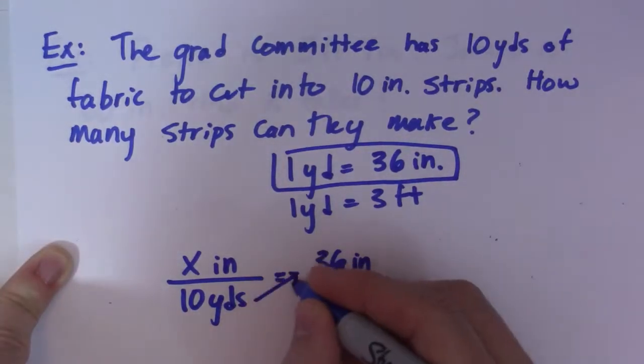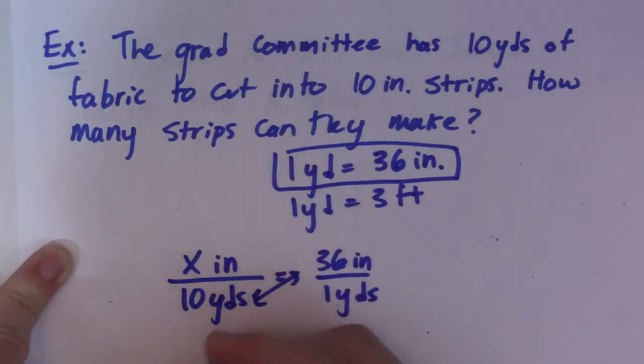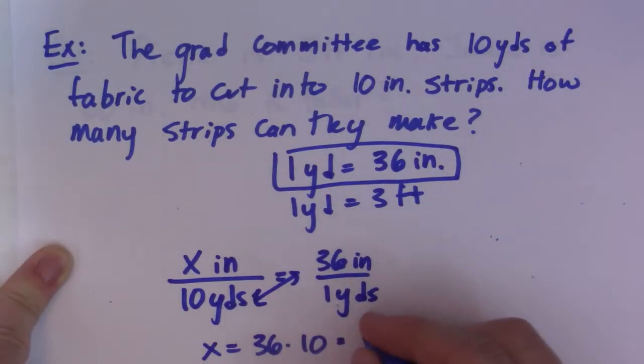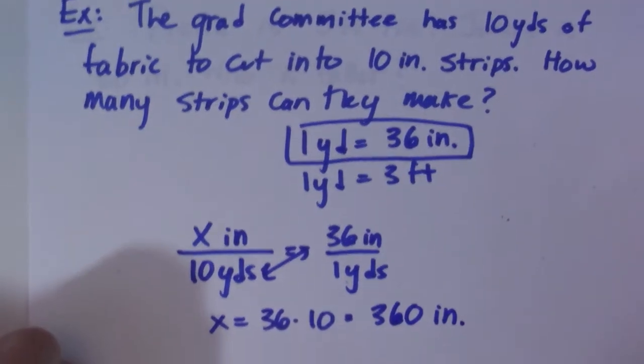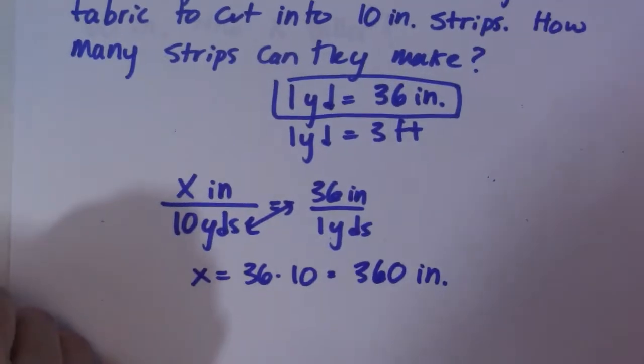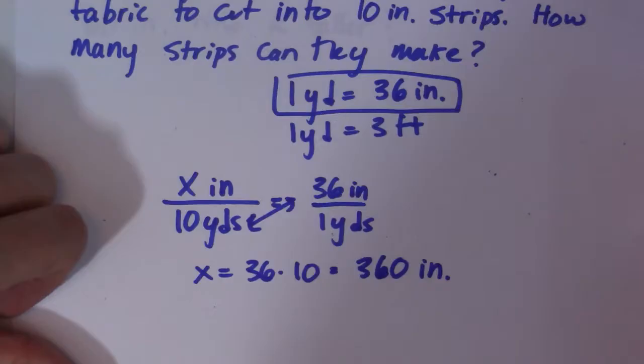What I end up doing now is just cross multiplying these two to get my answer. So 36 times 10 gives 360 inches. So now that I have that, I know that the length of that fabric is 360 inches. I want to know how many strips I can make.